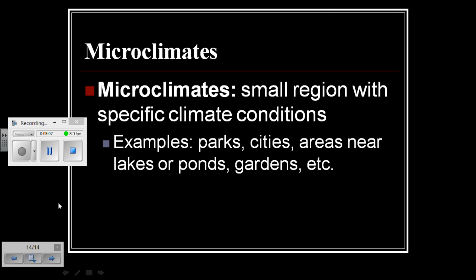Finally, we have microclimates. Microclimates represent small regions with specific climate conditions. Examples of such microclimates include parks, cities, areas near lakes or ponds, gardens, and many other things. And that completes our lessons on what causes climate. Thank you.